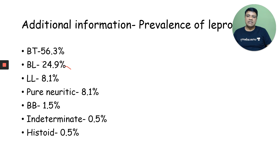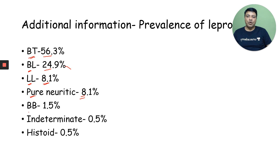Hansen's disease breakdown: BT Hansen's is seen in 56.3% of patients. BL Hansen's is seen in 24.9% of patients. LL Hansen's is seen in 8.1% of patients. Pure neuritic is again seen in 8.1% of patients. Pure BB with borderline accounts for 1.5% of patients. Both indeterminate and Histoid account for 0.5% of patients.